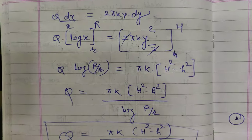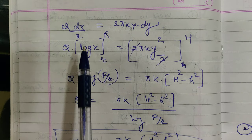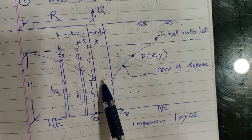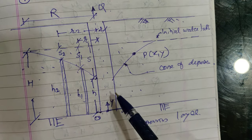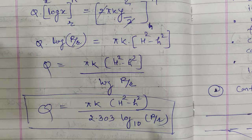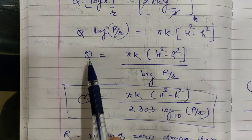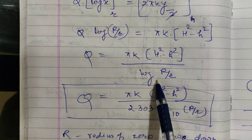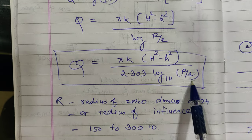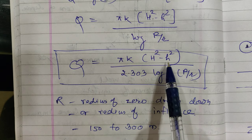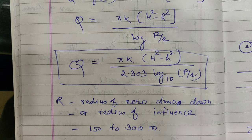Rearranging and integrating with limits: x from small r to capital R, and y from small h to capital H. Substituting these limits gives: Q = πk(H² - h²) / log_e(R/r). Converting to base 10: Q = πk(H² - h²) / [2.303 × log₁₀(R/r)]. This is the formula for discharge through an unconfined aquifer.